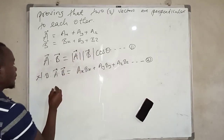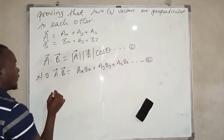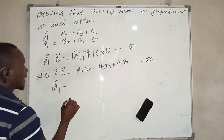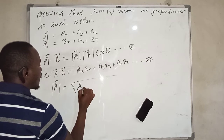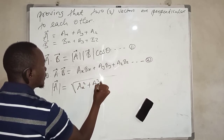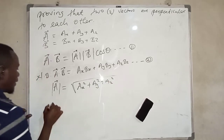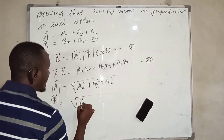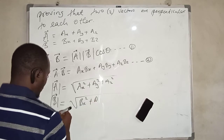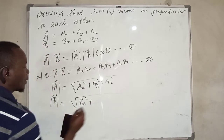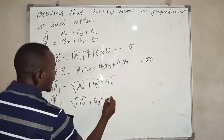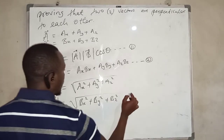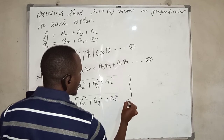We also know that the magnitude of vector a is the square root of ax squared plus ay squared plus az squared. The magnitude of vector b is the square root of bx squared plus by squared plus bz squared.